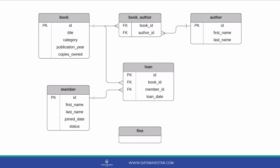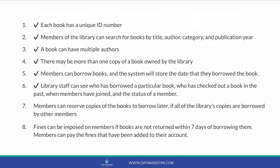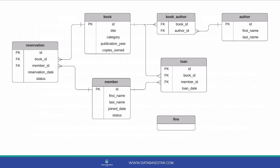There are two more requirements to go. Requirement 7 says that members can reserve copies of books. We would need to store the book to reserve, the member reserving it, the date they placed the reservation, and whether the reservation was cancelled or fulfilled — some kind of status — along with a primary key. We've added a reservation table, which is related to the book table and the member table. Reservations would be added to this table to keep track of them.